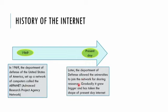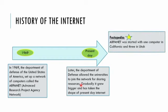Later, the Department of Defense allowed universities to join the network for sharing resources. Gradually it grew bigger and has taken the shape of the present-day internet. ARPANET was started with one computer in California and three in Utah.